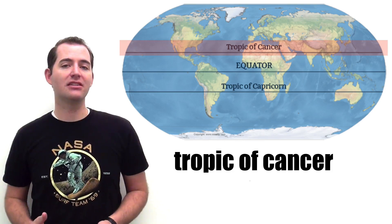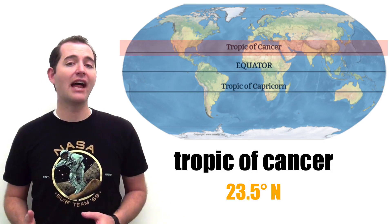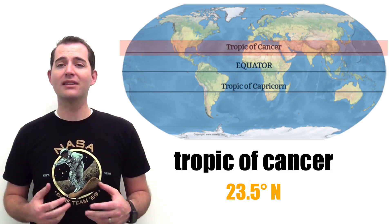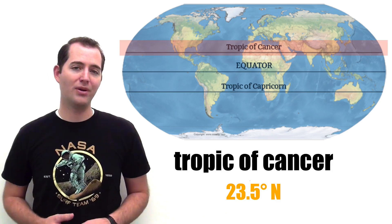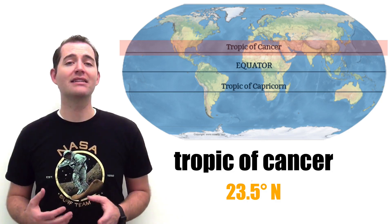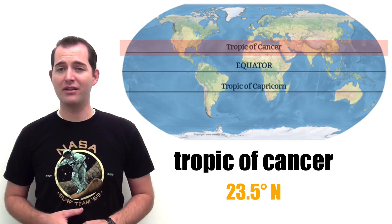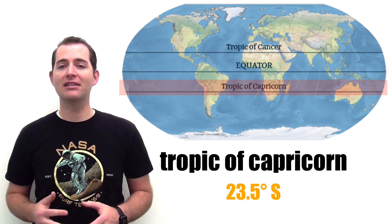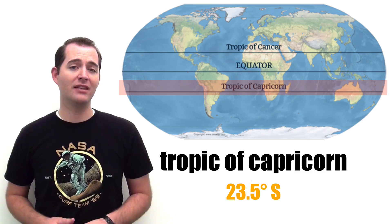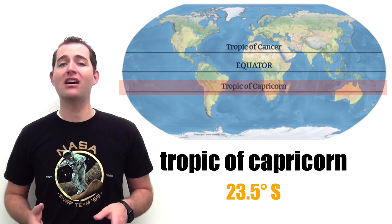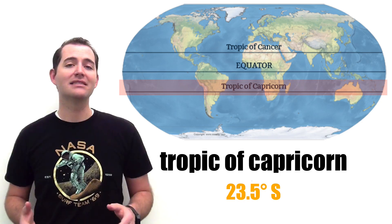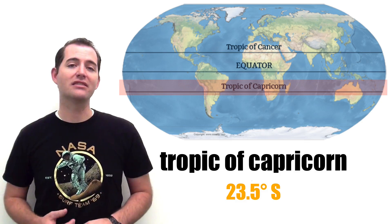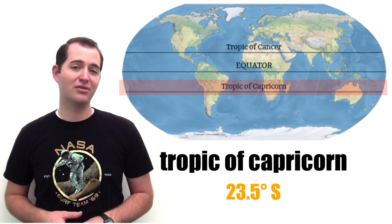The Tropic of Cancer is approximately 23 degrees of latitude north of the equator, and this is the furthest point north on the earth where the sun is directly overhead at some point during the year. The Tropic of Capricorn is approximately 23 degrees of latitude south of the equator and is the farthest location south where the sun is directly overhead at some point during the year. This event takes place around the winter solstice for the northern hemisphere, around December 21st each year.